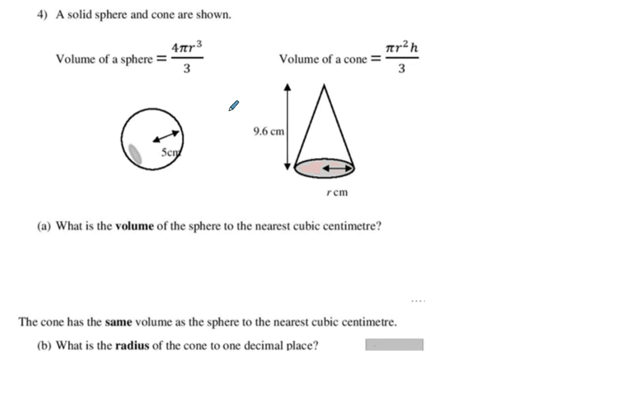Next question. A solid sphere and cone have shown. Volume of sphere, volume of cone. So they're nice enough to give us the formula. I'd like to put a third up there. What is the volume of the sphere to the nearest cubic centimeter? So we've got the formula so we don't have to write it. So we've got four thirds times pi. And the radius is five. So times five cubed. And you get five hundred and twenty three point six. So that would be five hundred and twenty four centimeter cubed to the nearest cubic centimeter. So the cone has the same volume. So remember, we do that horizontal layout and we do equals. What is the radius of the cone? To one decimal place.